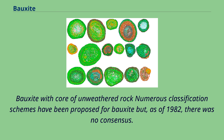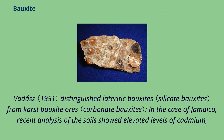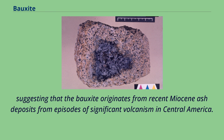Bauxite with a core of unweathered rock — numerous classification schemes have been proposed for bauxite, but as of 1982 there was no consensus. Vaudus distinguished lateritic bauxites from karst bauxite ores. In the case of Jamaica, recent analysis of the soil showed elevated levels of cadmium, suggesting that the bauxite originates from recent Miocene ash deposits from episodes of significant volcanism in Central America.